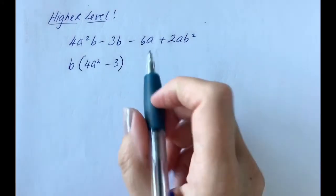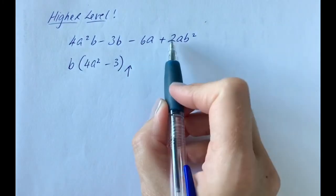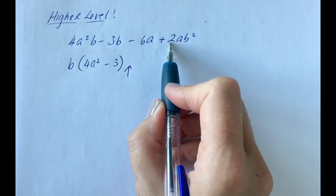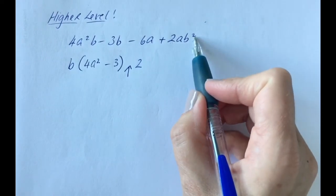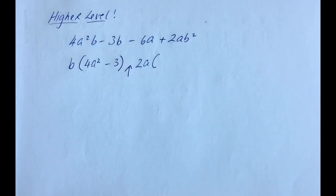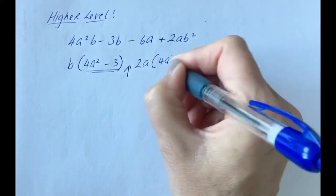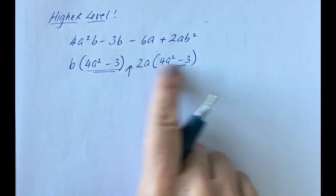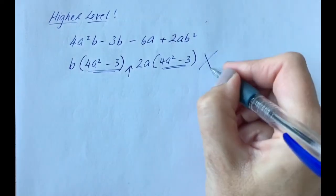Now looking at the next two terms: the highest common factor of 6 and 2 is 2, and the letters a and ab squared share only a. So we pull out 2a and open our bracket. But following the lead from the first bracket, I'd need 4a squared minus 3 in here — and 2 times 4 is 8, and a times a squared is a cubed. There's just no way we're going to make this work, so we're going to have to rearrange.